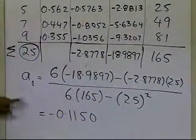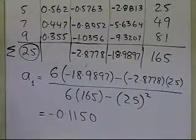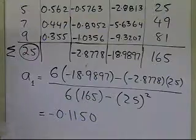That's the value of a1, which I get, for the z is equal to a0 plus a1 t linear regression line.